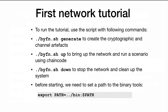The tutorial is basically three steps. Using the script we send a generate command which creates the cryptographic and general artifacts. Then the main part happens in the up command, which brings up the network and runs a sample scenario. Finally the down command cleans everything up. The script needs access to the binary tools we just installed, so you need to export the path to make it accessible.